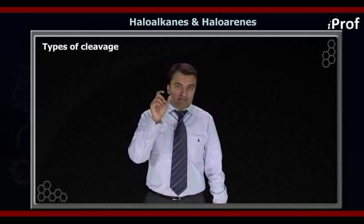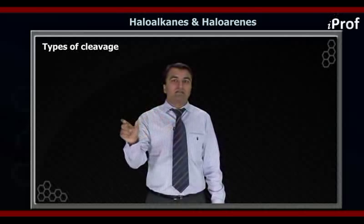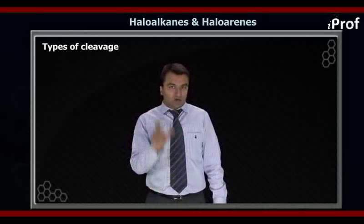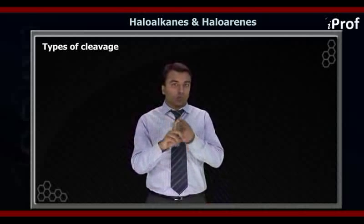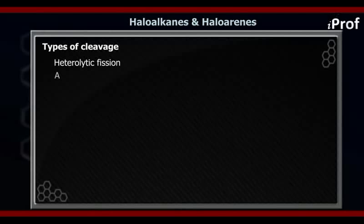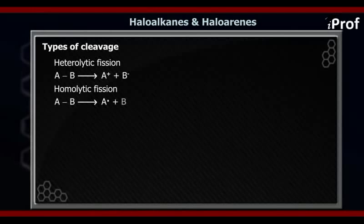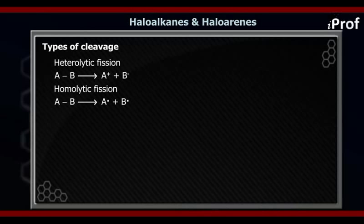What will happen is the substrate will have the cleavage of its bond. In the substrate, we can have two types of bonds. One type of bond can be polar and one can be non-polar. For example, if it is an alkane, then in alkane we have only carbons. When carbons are linked to other carbons, there will be no difference in electronegativity and hence they are non-polar.